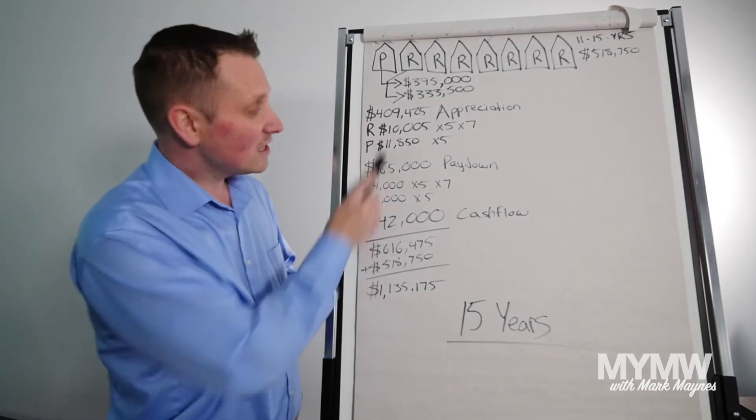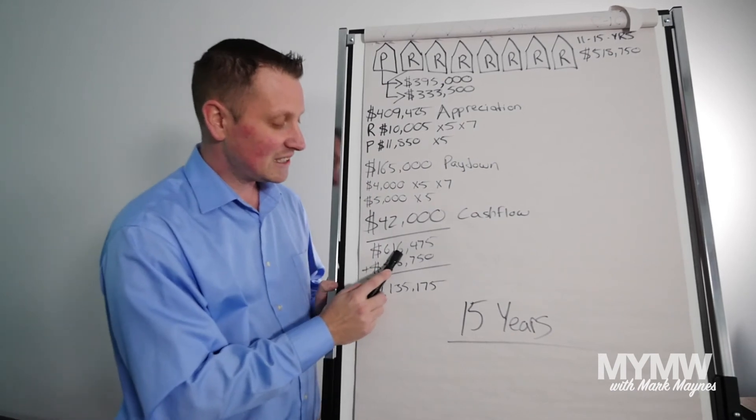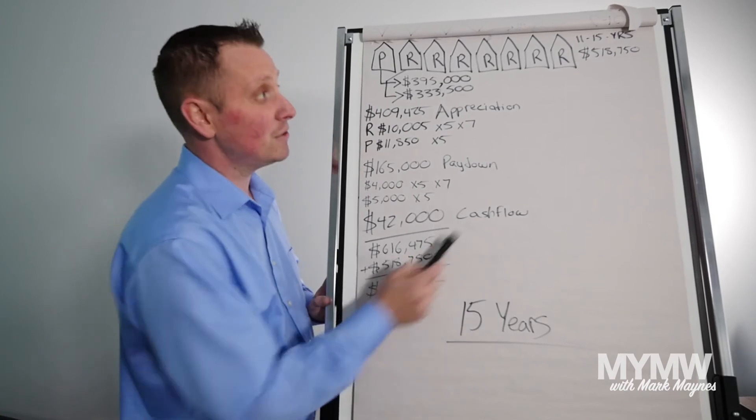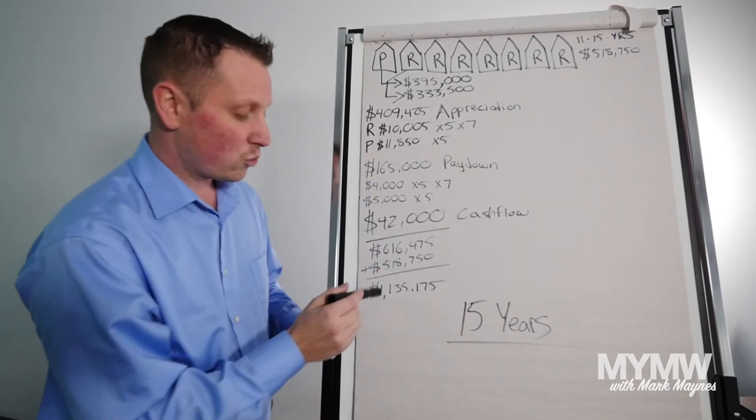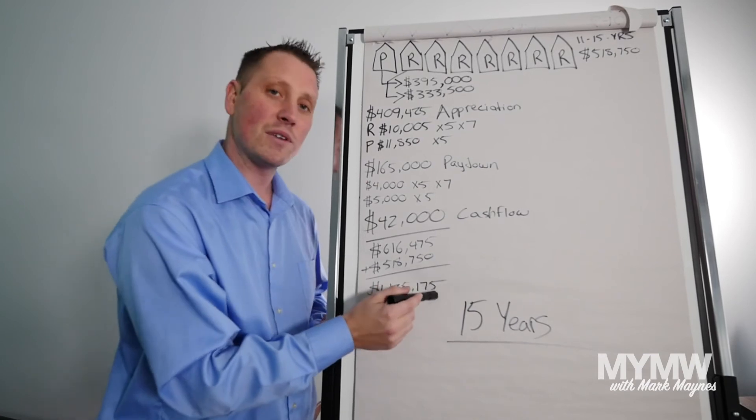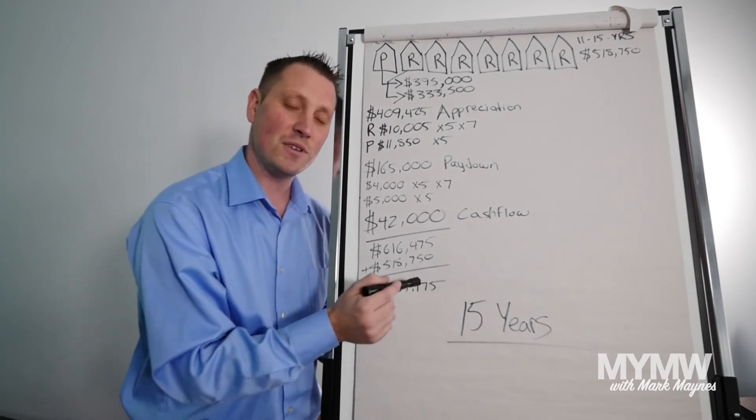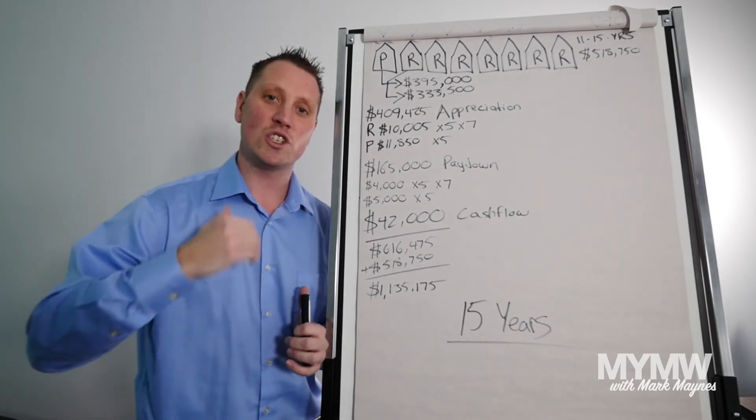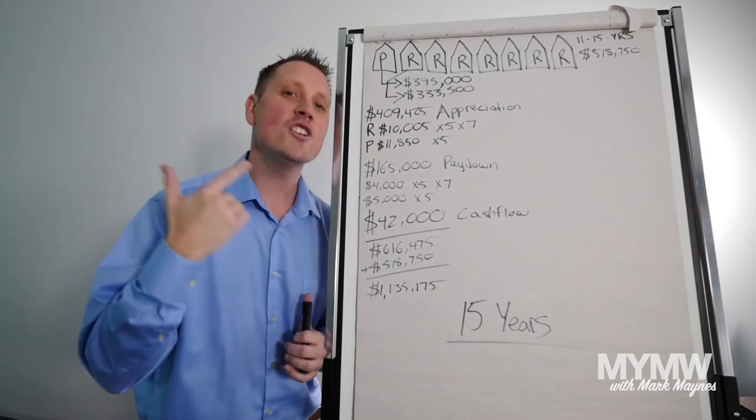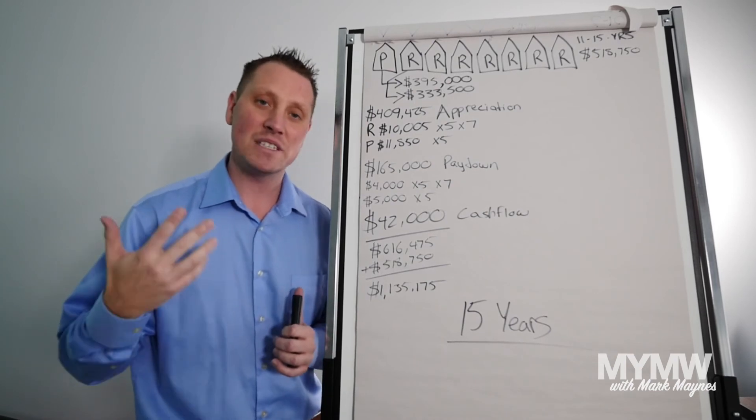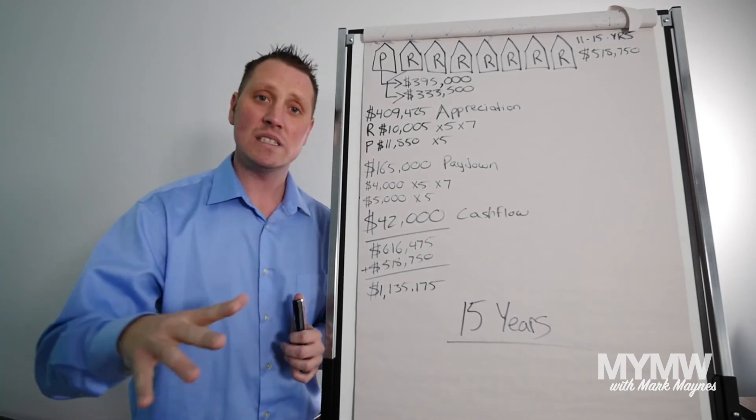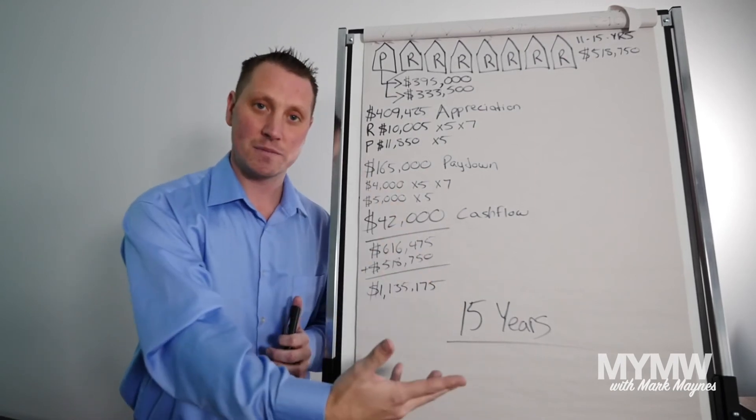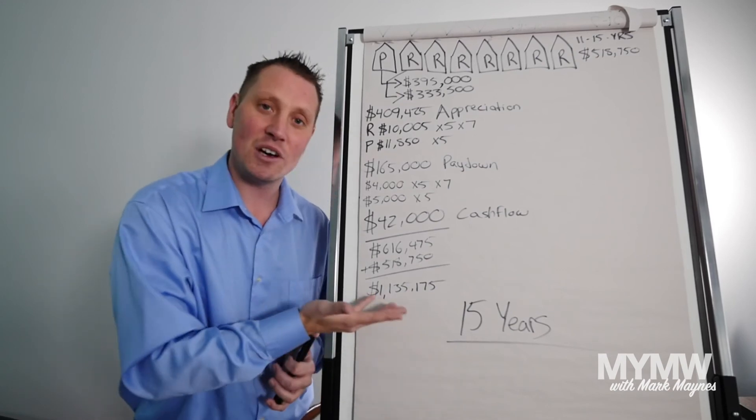So now, these numbers add up to $616,475. Plus your original $518,750, which you came in with, that's $1,135,175 million in 15 years. I just showed you how to make $1,000,000 without changing your lifestyle, without $1 added. You already probably have this equity. And let's say you don't. Let's say you just bought your first property. So what if we have to take 25 years?